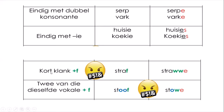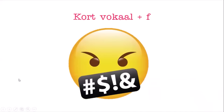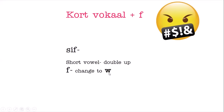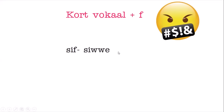Woorde met 'n F aan die einde - words ending in F. I always say it's the F word - we do not say the F word. We must look at the word. There is a kort vokaal and an F. We are not going to say the F, we are going to change it. Because it's a short vowel, we double the consonant. And the F changes to a W. So 'sif' word 'siwwe' - the F changes to W.